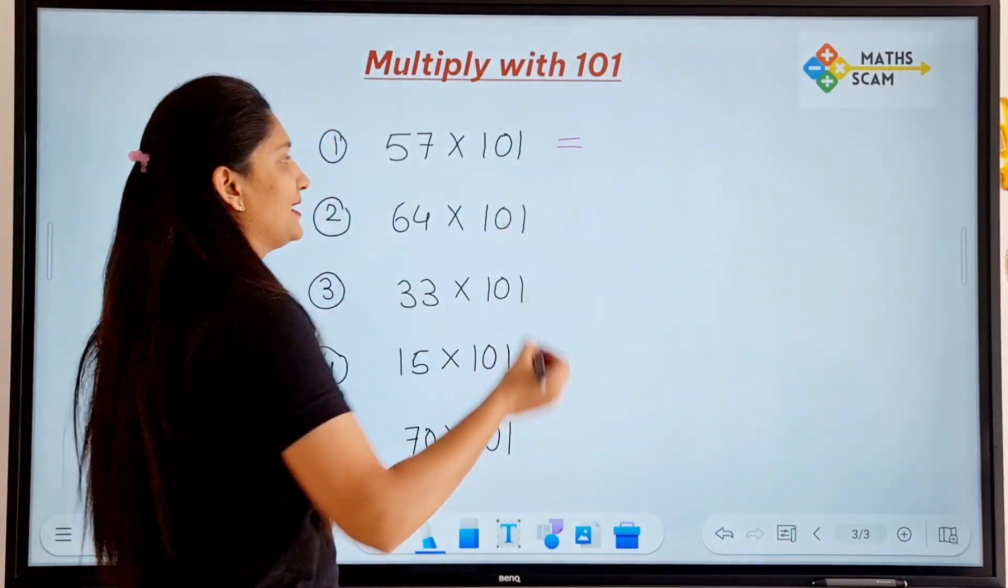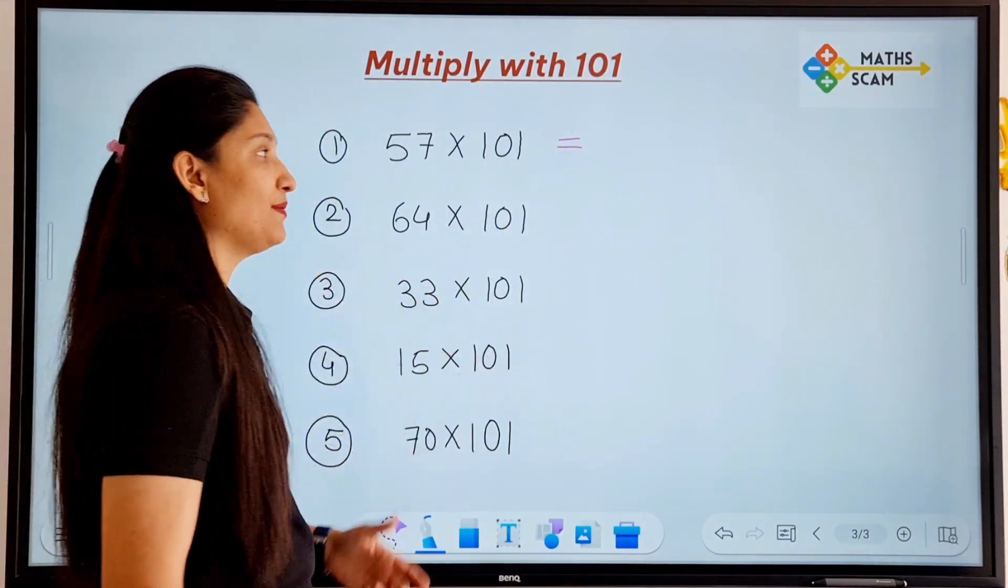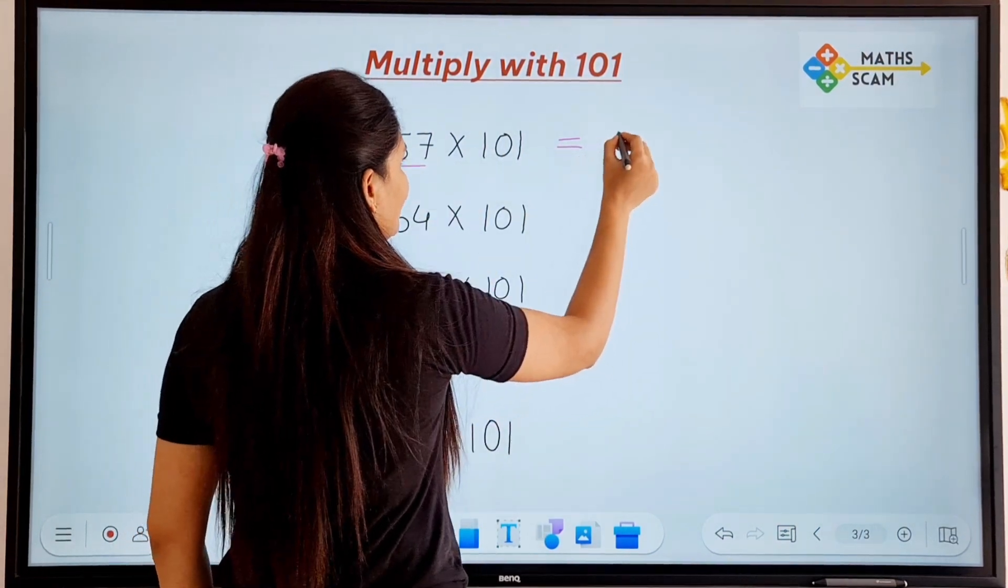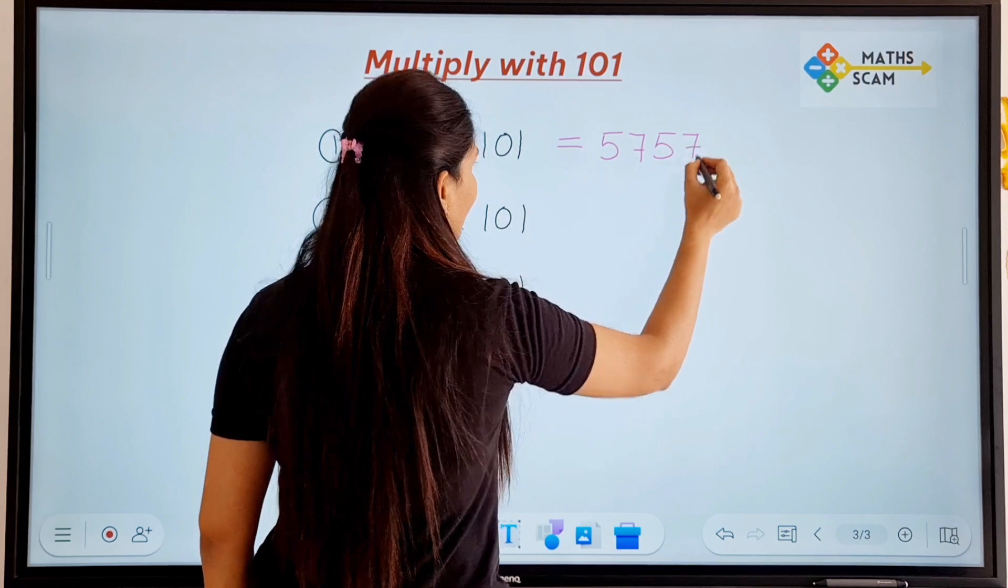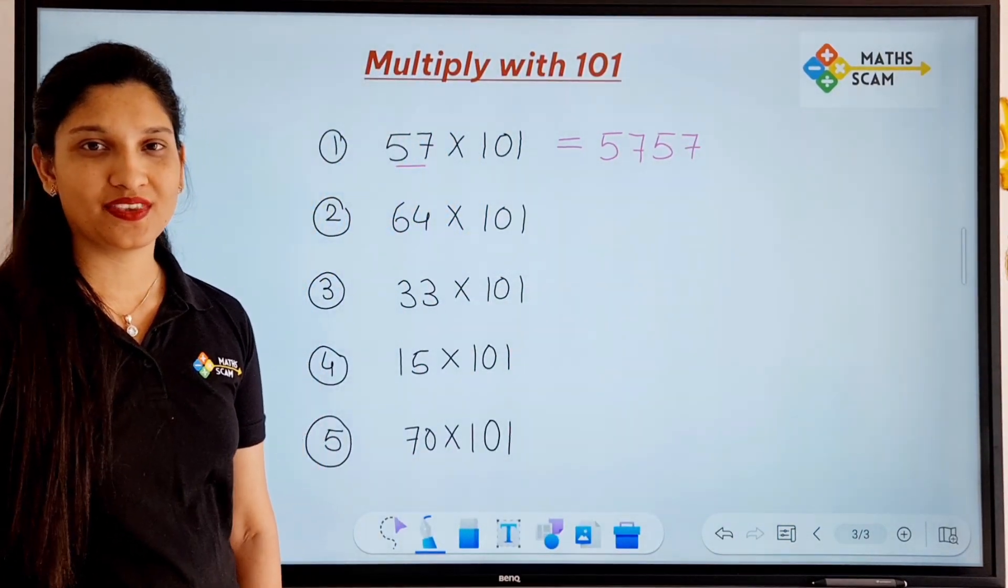the first question is 57 times 101. So the same thing you have to write down 2 times. That is 57, 57. So the answer is 5,757. Okay?